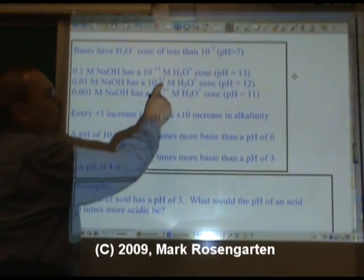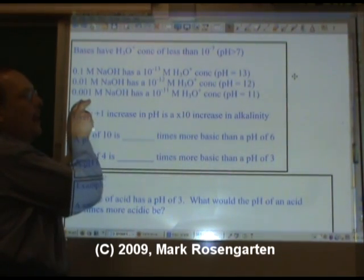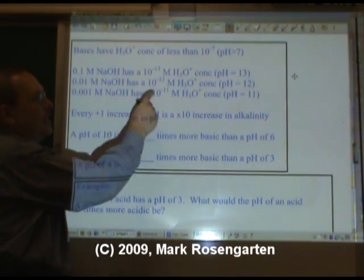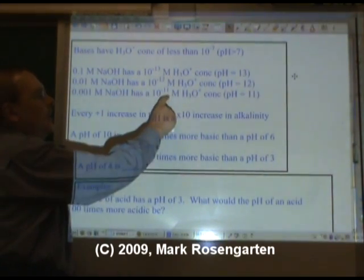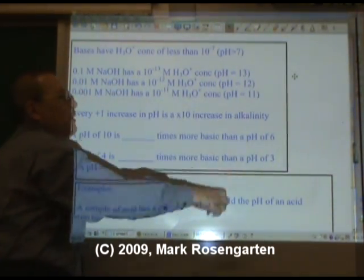Take the exponent, reverse the sign, pH of 12. A thousandth molar NaOH solution has a 10 to the negative 11th molar H3O plus concentration. Take the exponent, reverse the sign, pH is 11.